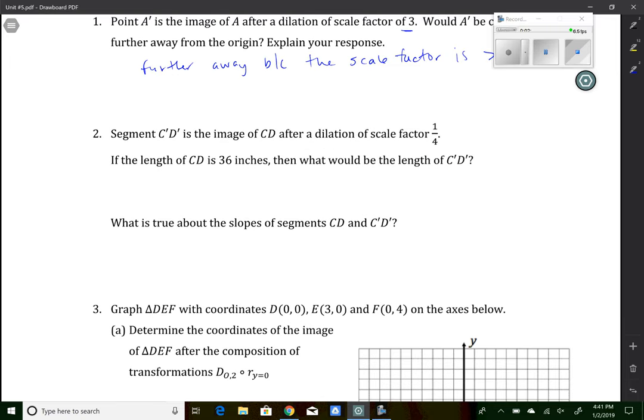Number two says segment C prime D prime is the image of CD after a dilation of scale factor one fourth. So it's getting smaller. So the length of CD is 36. So what would be the length of C prime D prime? So we could say it is one fourth of 36. So one fourth times 36, which is just nine inches.